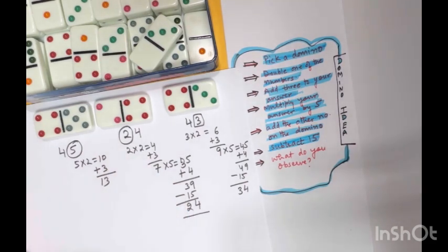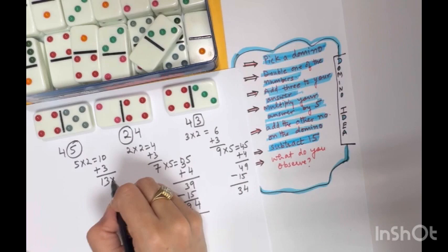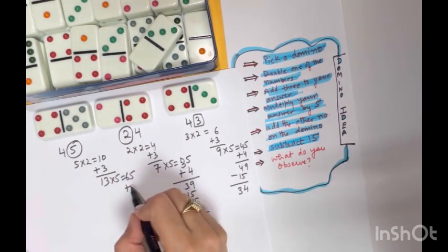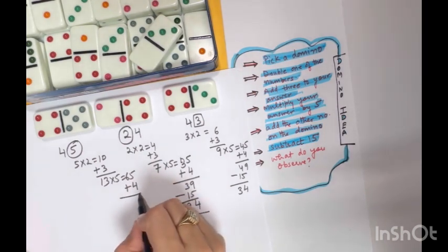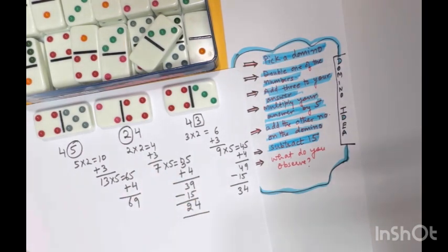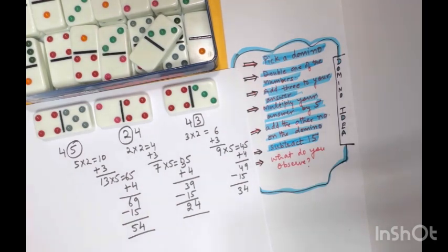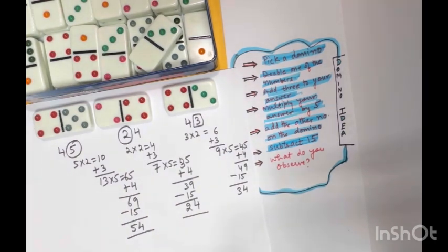We get 13. Multiply by 5, we get 65. Add the other number which is on the domino, we get 69. Then subtract 15. We get the number 54. Now observe carefully.